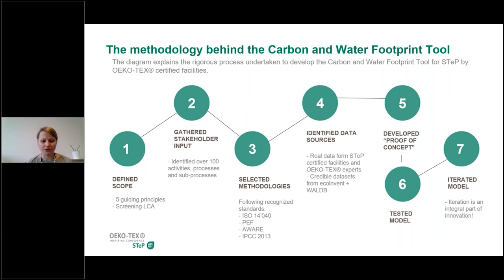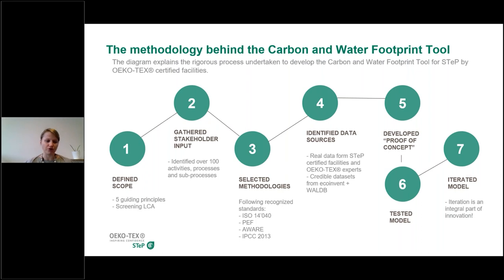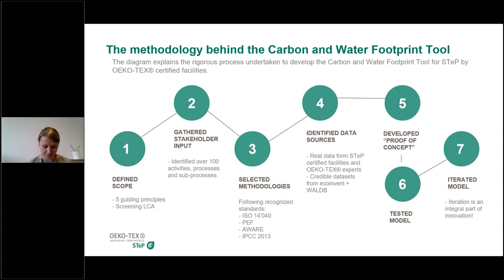To give you insight into how we executed the project: the first thing we did was define a scope and main guiding principles. The most important guiding principle was credibility — we wanted to make sure the tool and its results are credible, using the latest science and latest available data on environmental impacts within the textile supply chain.